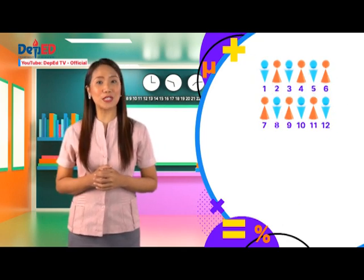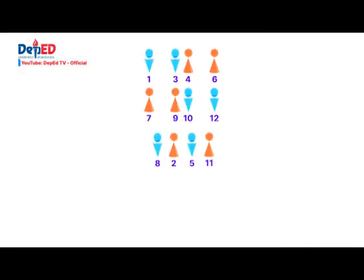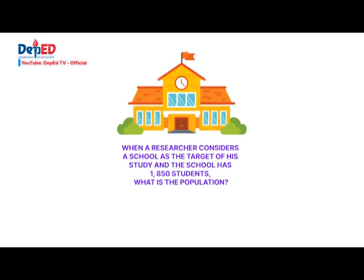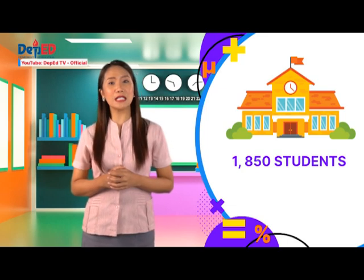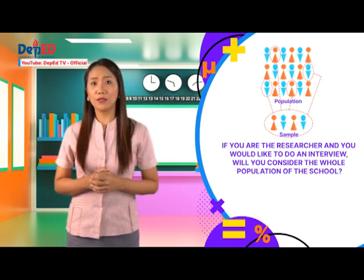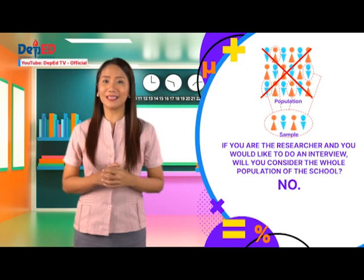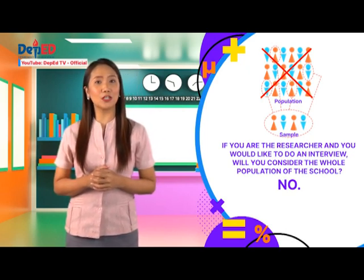If a researcher opts to use sample rather than a population, what must be taken into consideration? The researcher must take into consideration the number of elements in the sample and how these elements can be chosen out of the target population. When the researcher considers a school as the target of his study and the school has 1,850 students, the population is 1,850 students. If you are the researcher and would like to do an interview, you would not consider the whole population — and that's good. It means you have an idea of the process we do in conducting research.